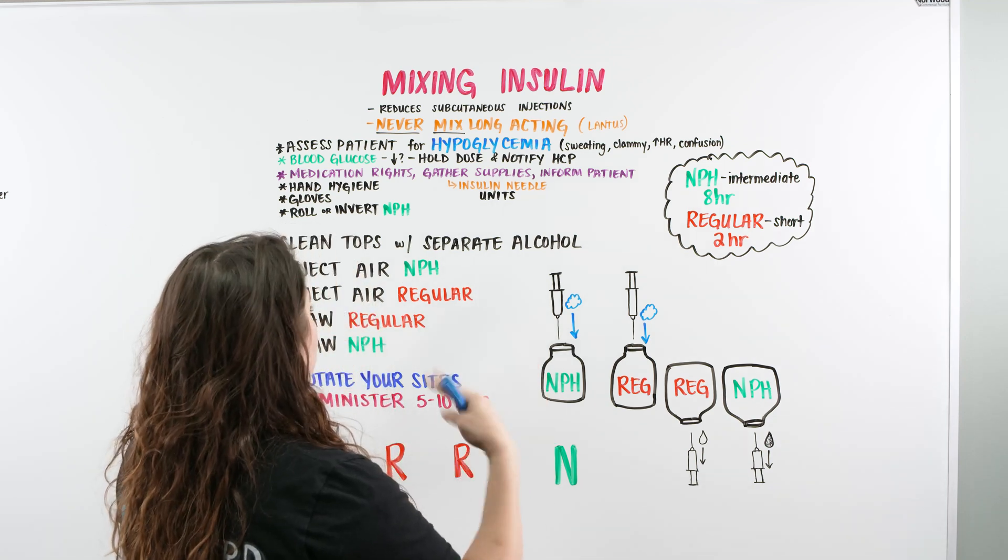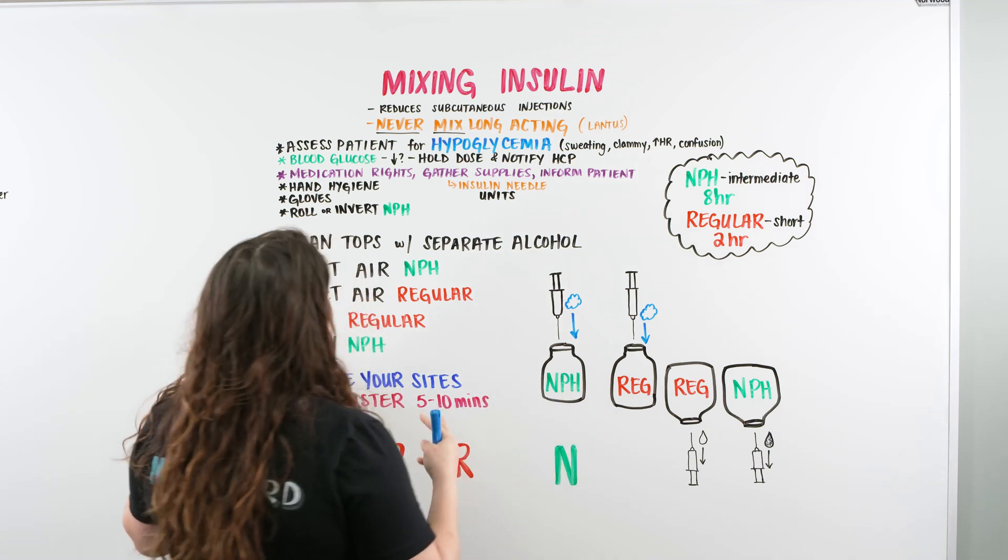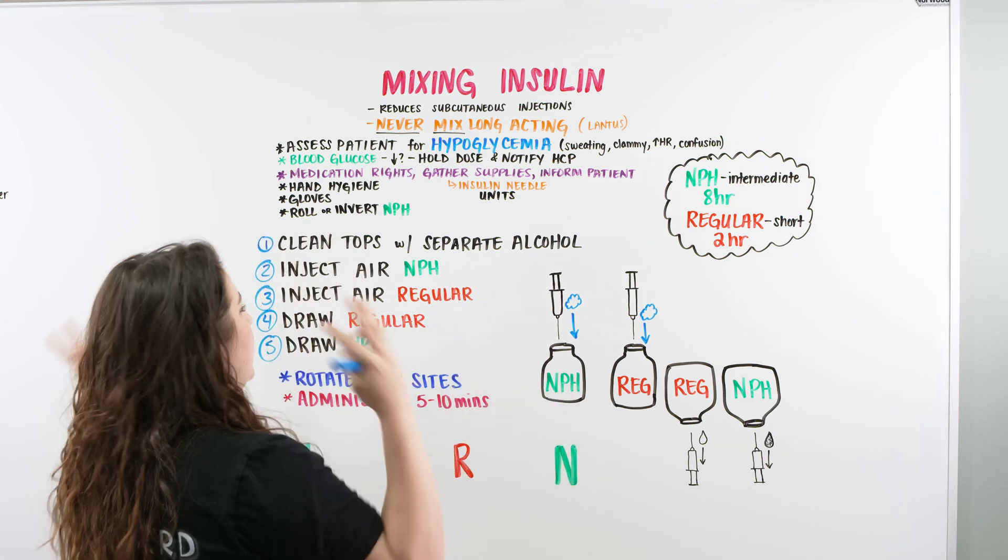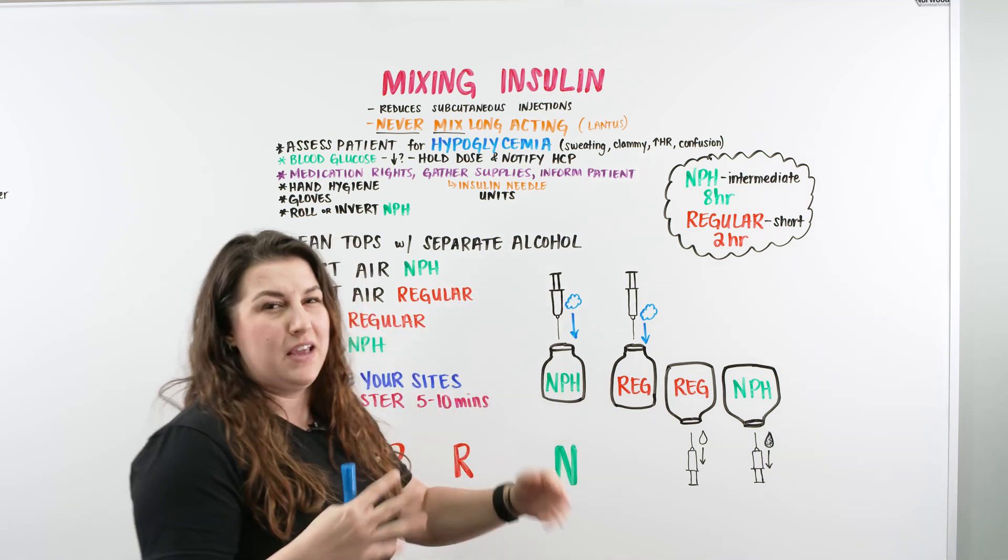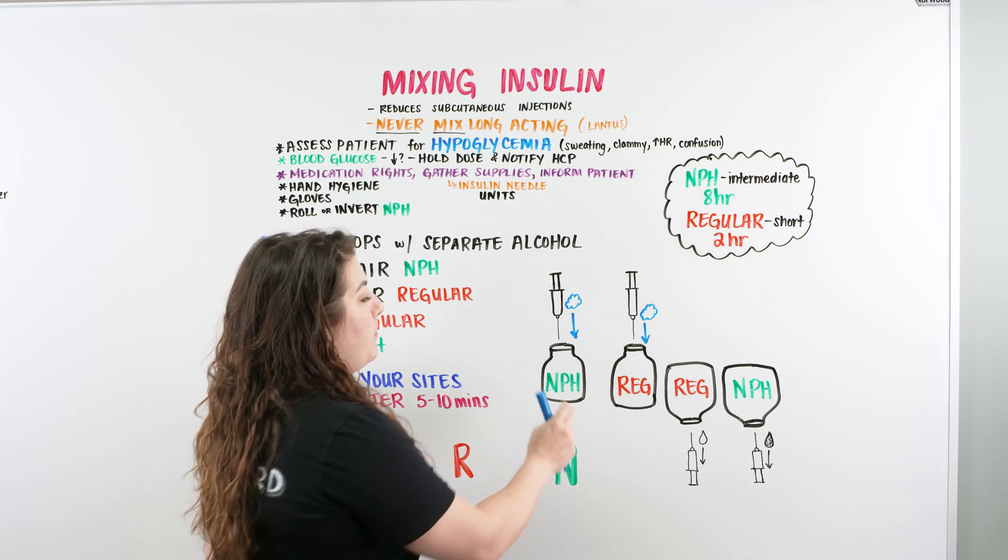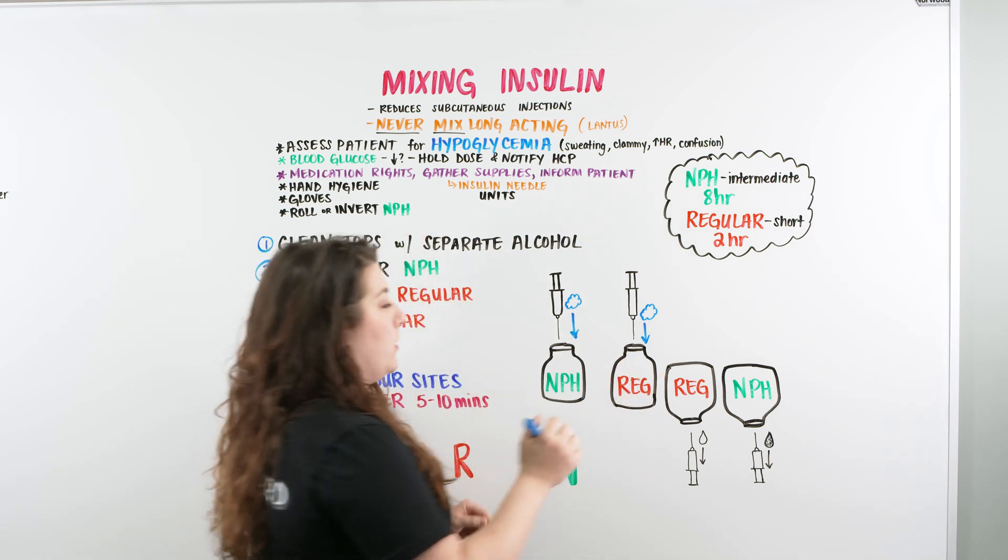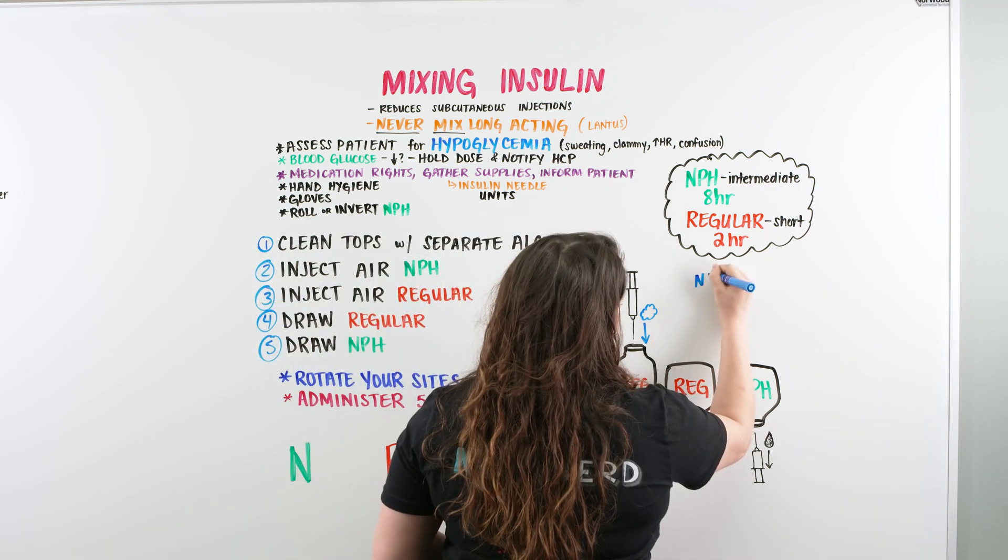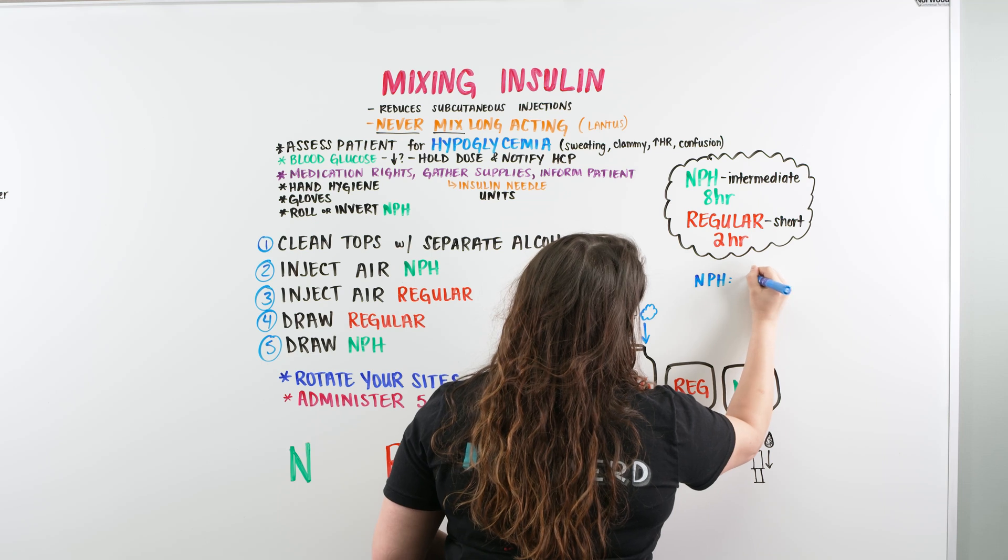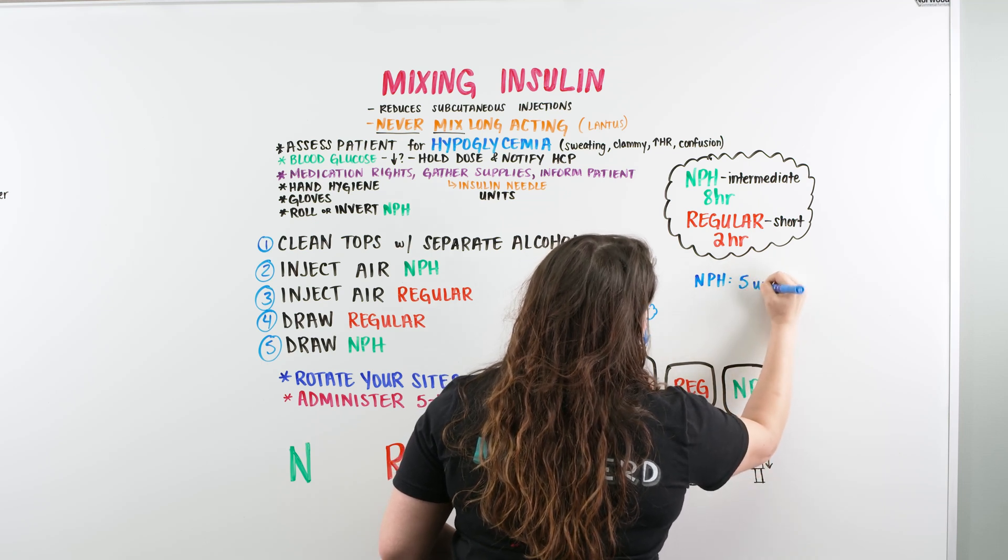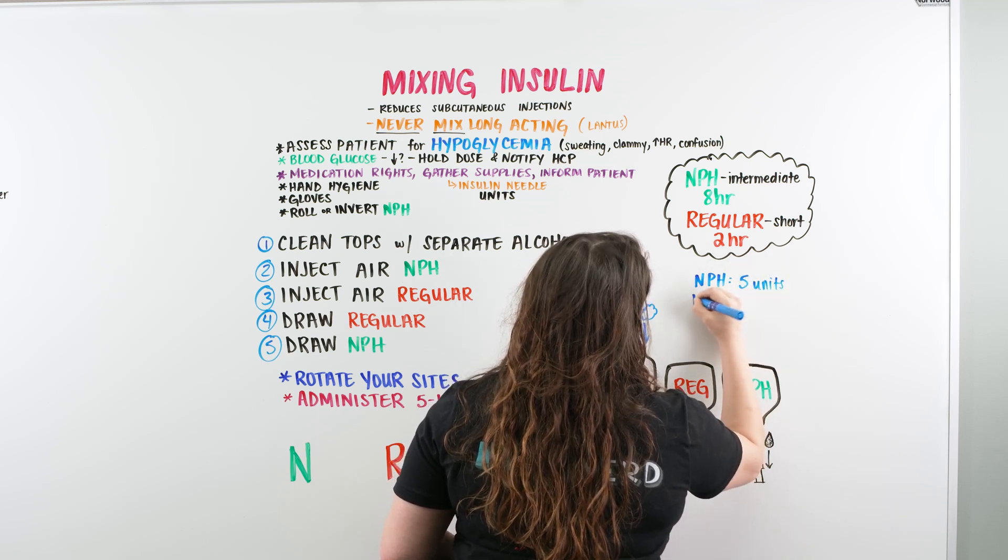So you're probably sitting there like, you're saying inject the air. What does that even mean, inject the air? So when we give insulin, NPH and regular, we're usually in order for each one. So let's just say for the NPH, we are going to be giving them five units, and for our regular, we are going to be giving six units.